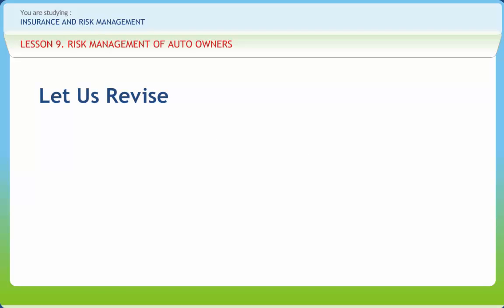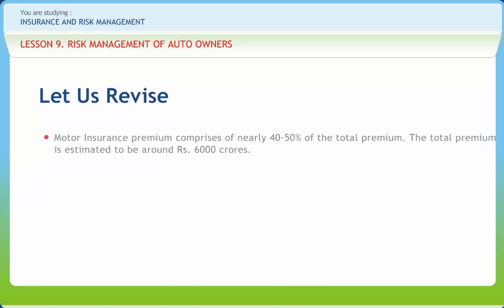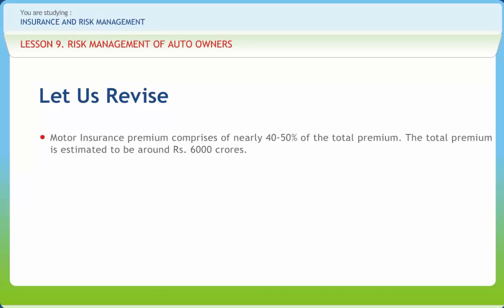Before we end, let us briefly revise what we have studied. As per the Motor Vehicles Act, all vehicles that ply in a public place should possess compulsory third-party insurance cover. It is the single largest portfolio. Motor insurance premium comprises nearly 40–50% of the total premium, estimated to be around Rs. 6,000 crores. Motor portfolio is one where premium flows throughout the year. Risks covered include own damage and third-party liability. Depending on the jurisdiction, the insurance premium can be either mandated by the government or determined by the insurance company in accordance with a framework of regulations set by the government.